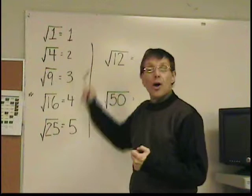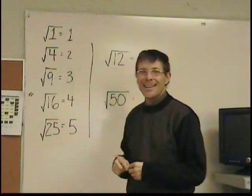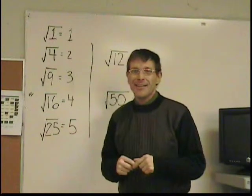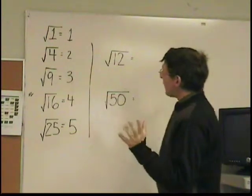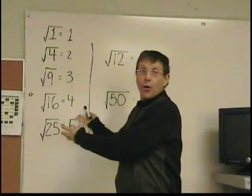And remember, it's important to know your square root numbers through at least the square root of 20, if you can make yourself a list. Now, when you have the square root of a perfect square number, it comes to a whole number.